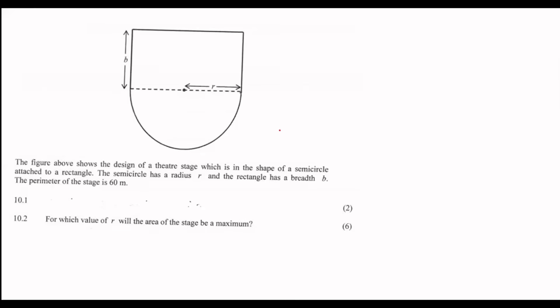What I always tell students to do is start at the question. The question says, for which value of R will the area be a maximum? So what do they want? They want the area. I know how optimization questions work - they all follow the same recipe. So what you do is find a formula for area. They want the area of the stage. The stage is the semicircle and the rectangle, so we need to find the area of that.